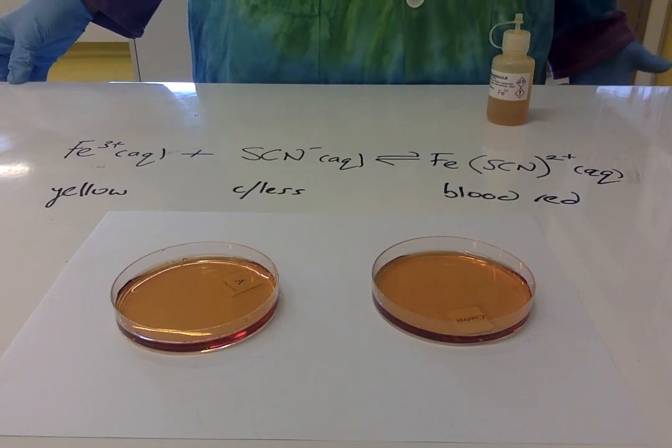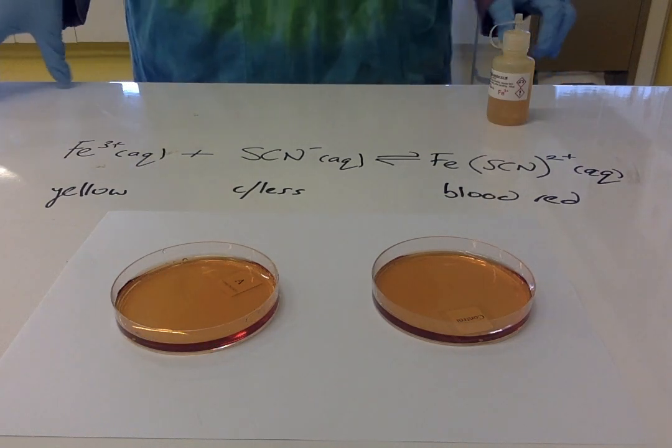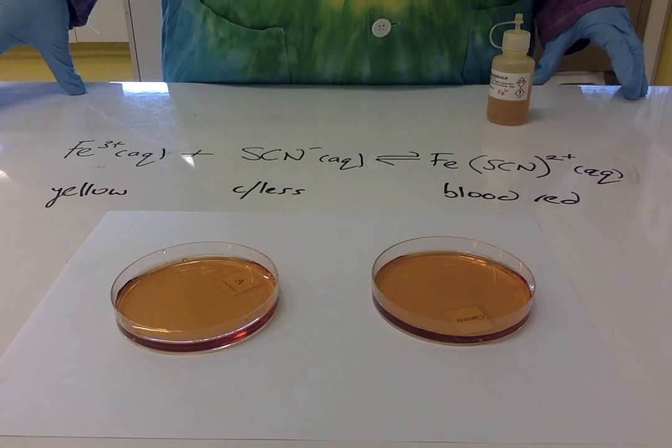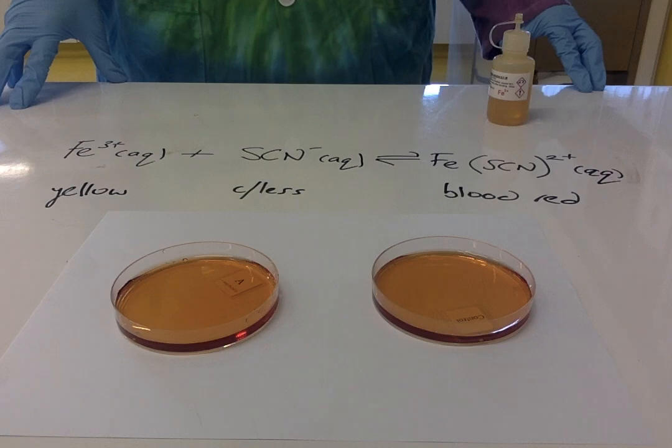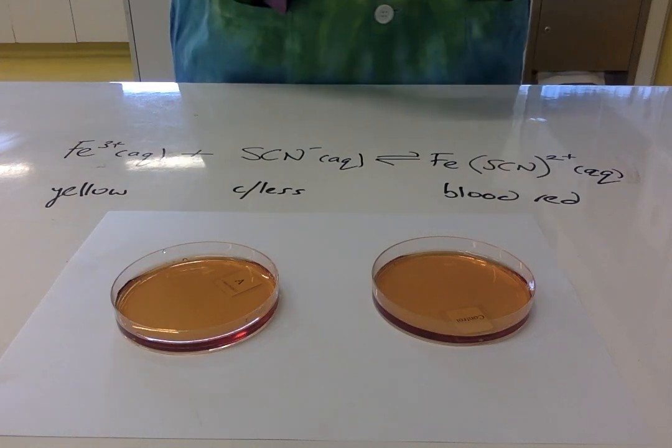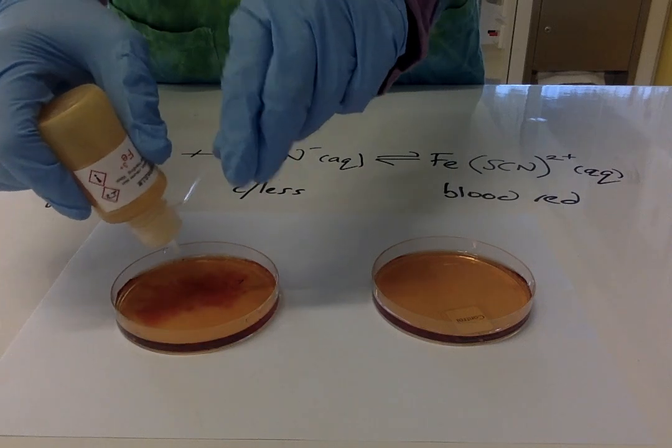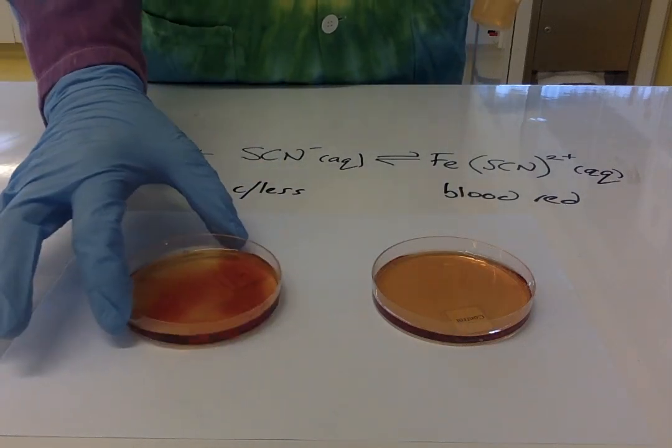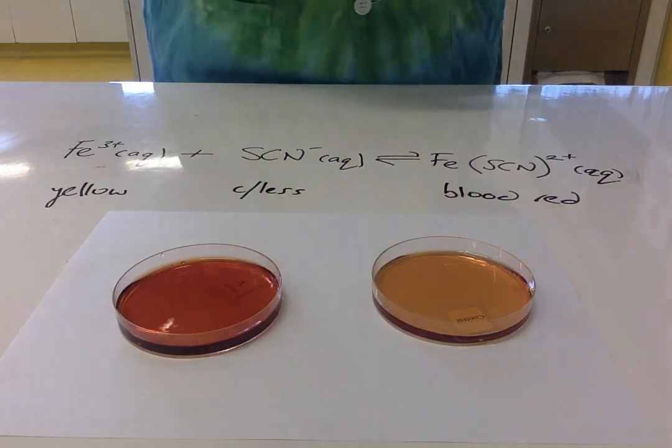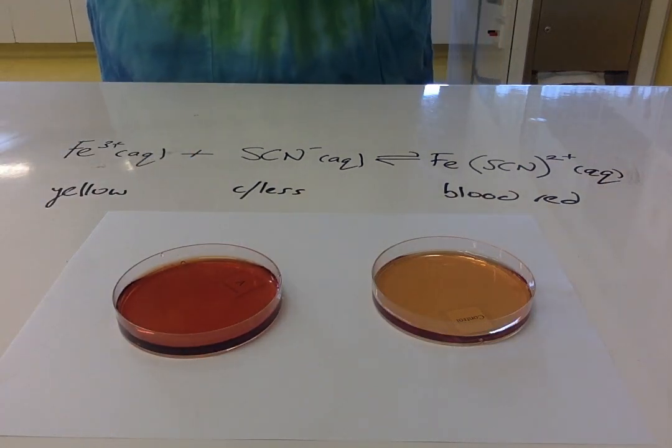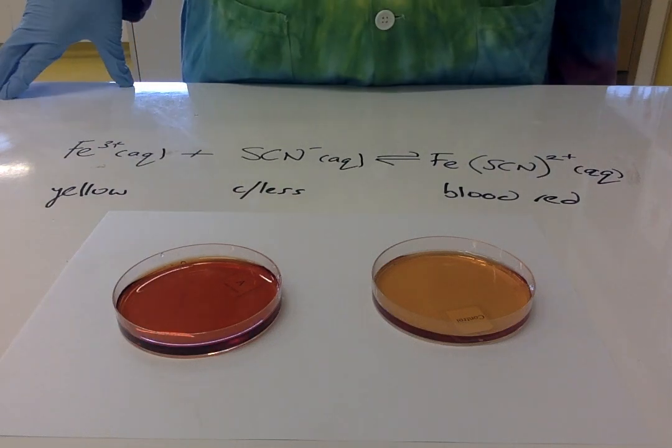One of these will act as a control. The first test I'm going to do is add some iron nitrate, so in effect I'm adding Fe3+. What you can see happen there is the color has gone distinctly darker, so that's resulted in an equilibrium shift to the right to use up those extra Fe3+ ions.